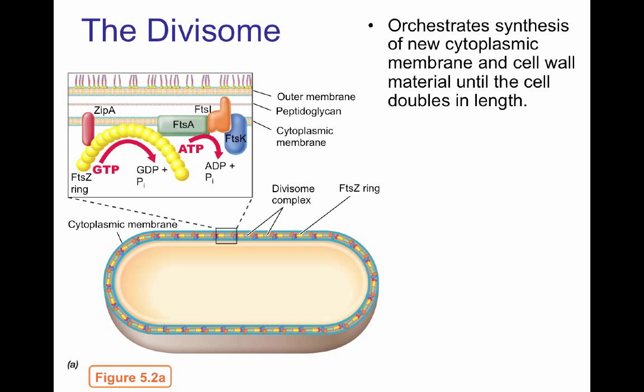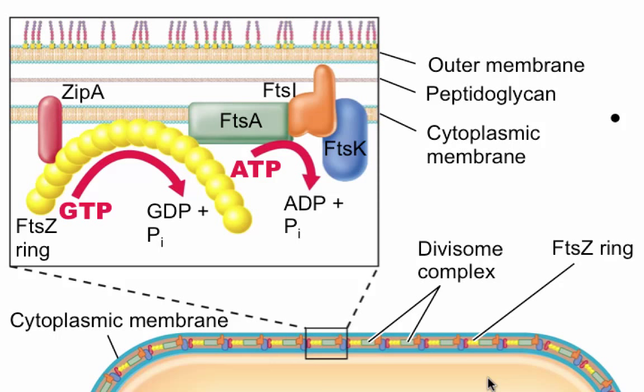The divisome orchestrates the synthesis of new cytoplasmic membrane and cell wall only in one particular region of the cell. It is mostly formed by a tubulin-like protein called FTSZ — FTS stands for filamentous temperature-sensitive, as these mutants were discovered with temperature-sensitive mutations. FTSZ hydrolyzes GTP to form GDP and phosphate, and as that hydrolysis happens, the ring depolymerizes and shrinks, helping separate the two cells.